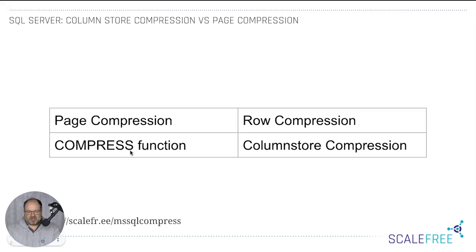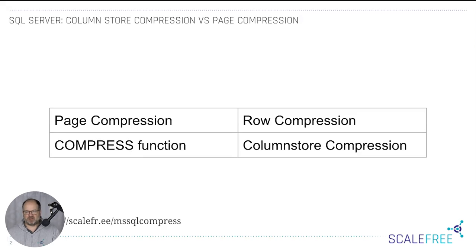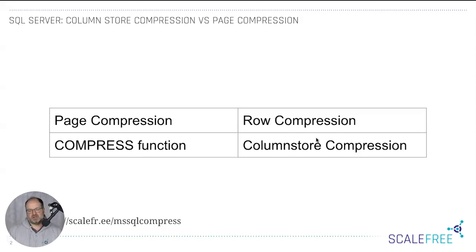There's also the compress function, which compresses input — like a blob or binary field — using GZIP, and an uncompress function for decompressing. We use it especially for compressing large blob fields. And then there's column store compression, which reorganizes your pages and compresses the data by columns.